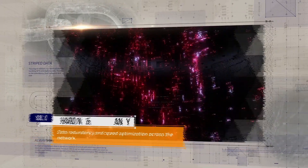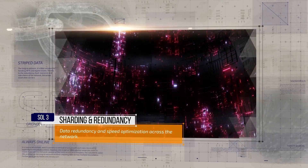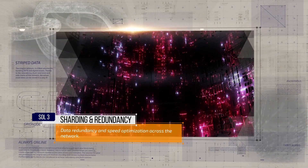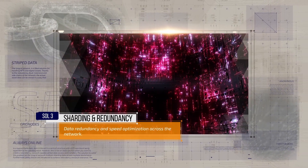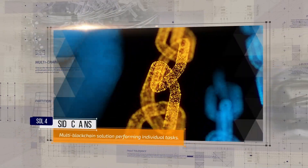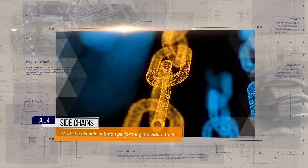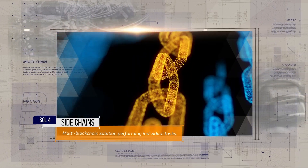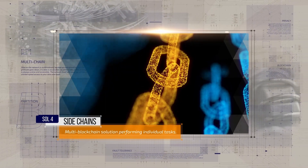The Unigrid network involves sharding data across multiple blockchains. Furthermore, parity blocks are introduced to achieve redundancy and fault tolerance. The Unigrid network places blocks on appropriate sidechains based on the type of work currently being sent by a communicating node. Each sidechain is controlled by a group of grid nodes.